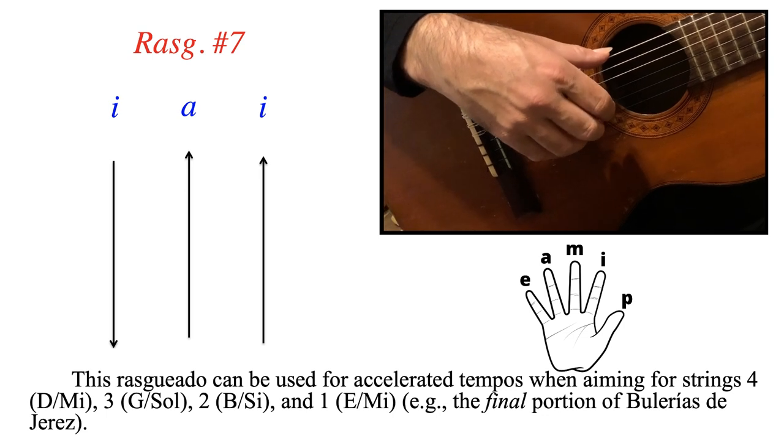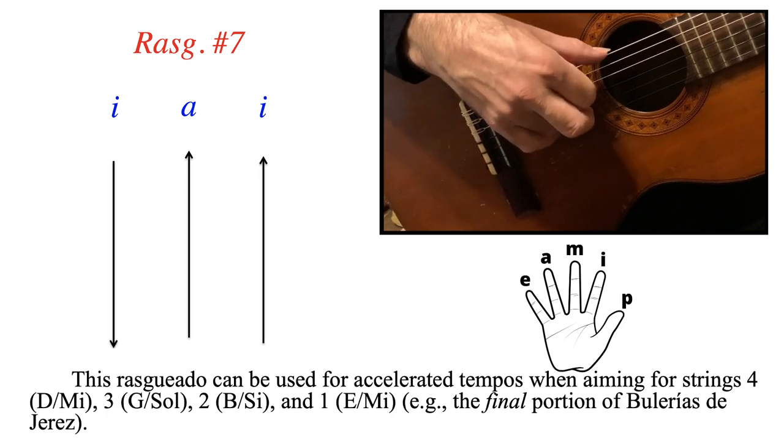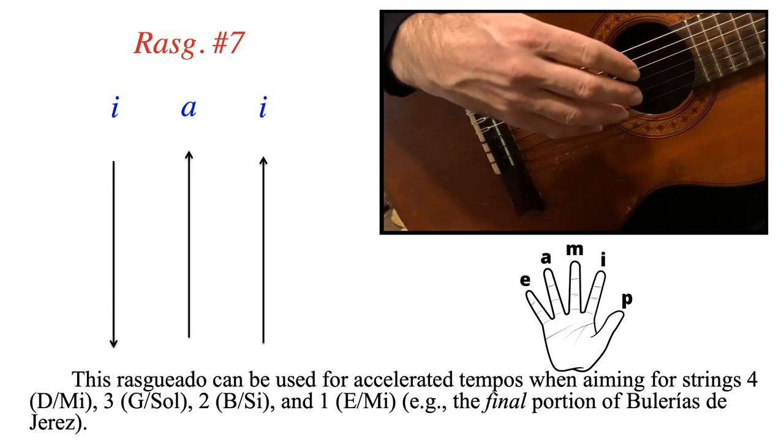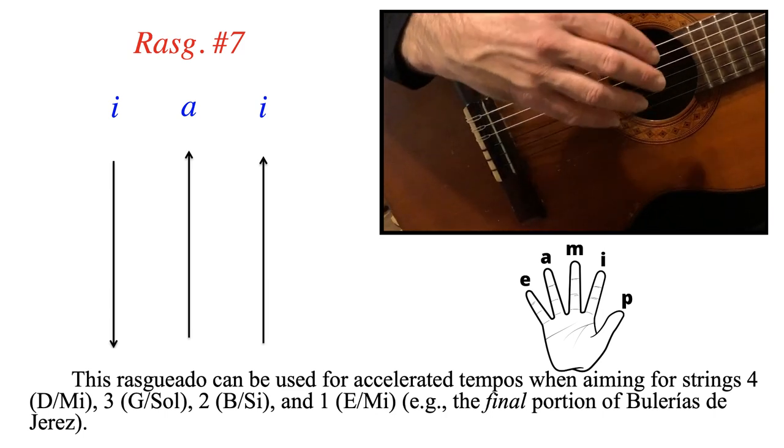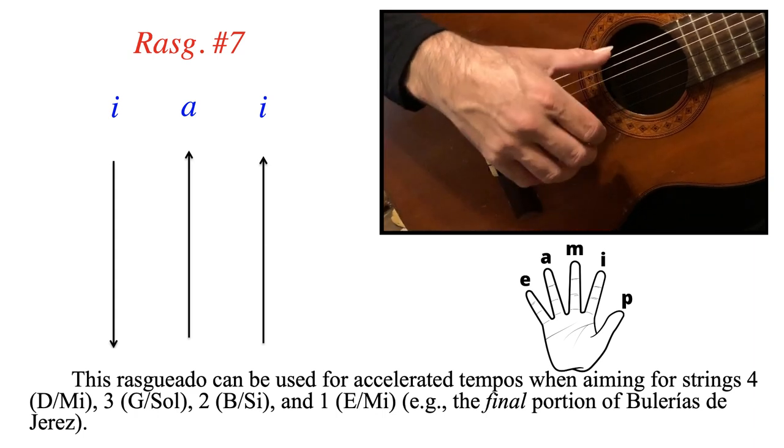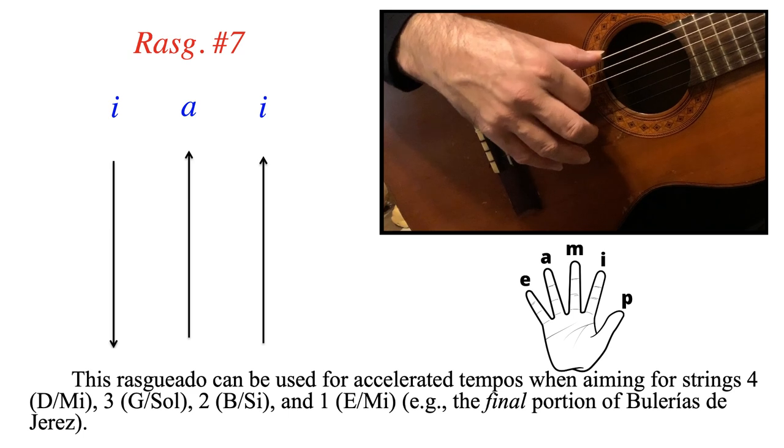Now number 7. We've got an upward I, downward A, downward I. So this one could be used for accelerated tempos when you're aiming for strings like 4, 3, 2, and 1. So you're anchored around here, and you've got kind of a narrow range.